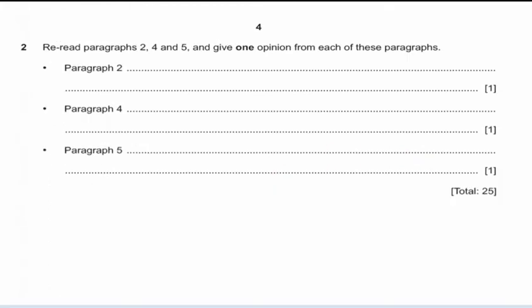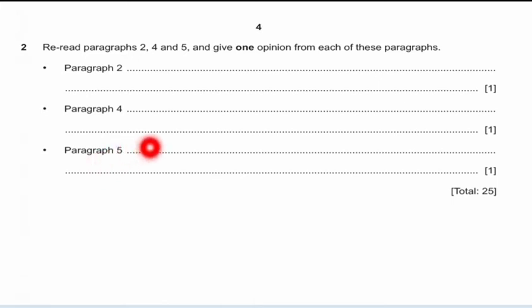In Question 2, the examiner asks you to re-read paragraphs 2, 4, and 5 of the passage and give one opinion from each of these paragraphs. You have to scan the factual text and identify which opinion is given in paragraph 2, paragraph 4, and paragraph 5. For this purpose, you need to read those paragraphs very carefully in order to trace out the opinion from each specific paragraph.